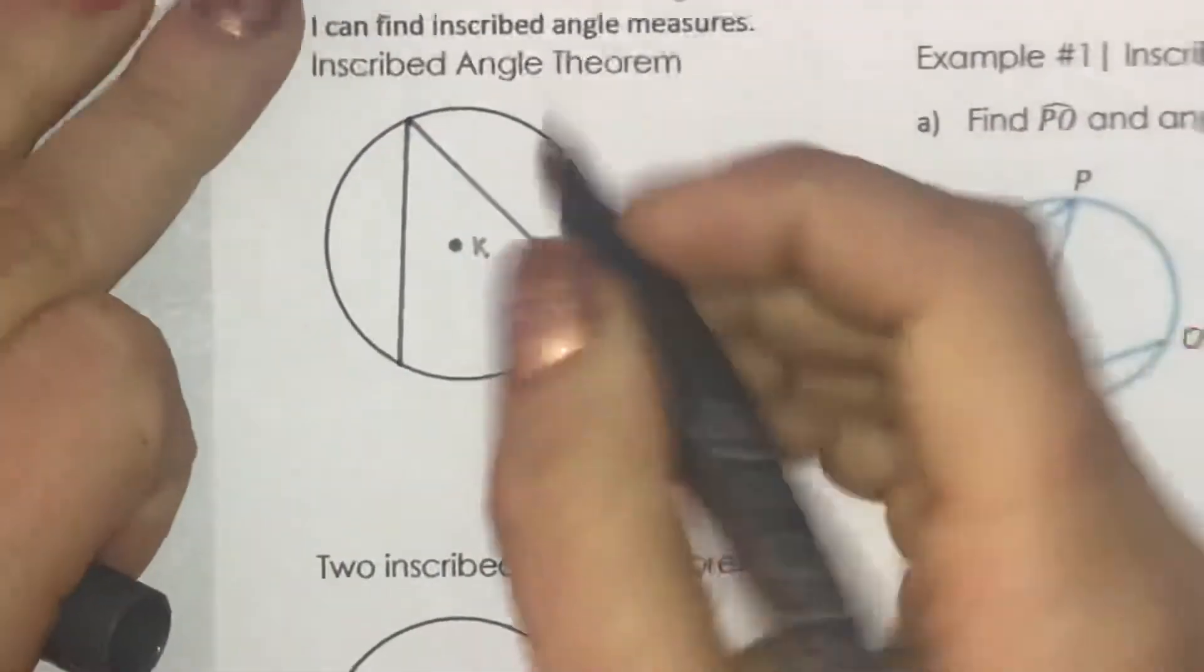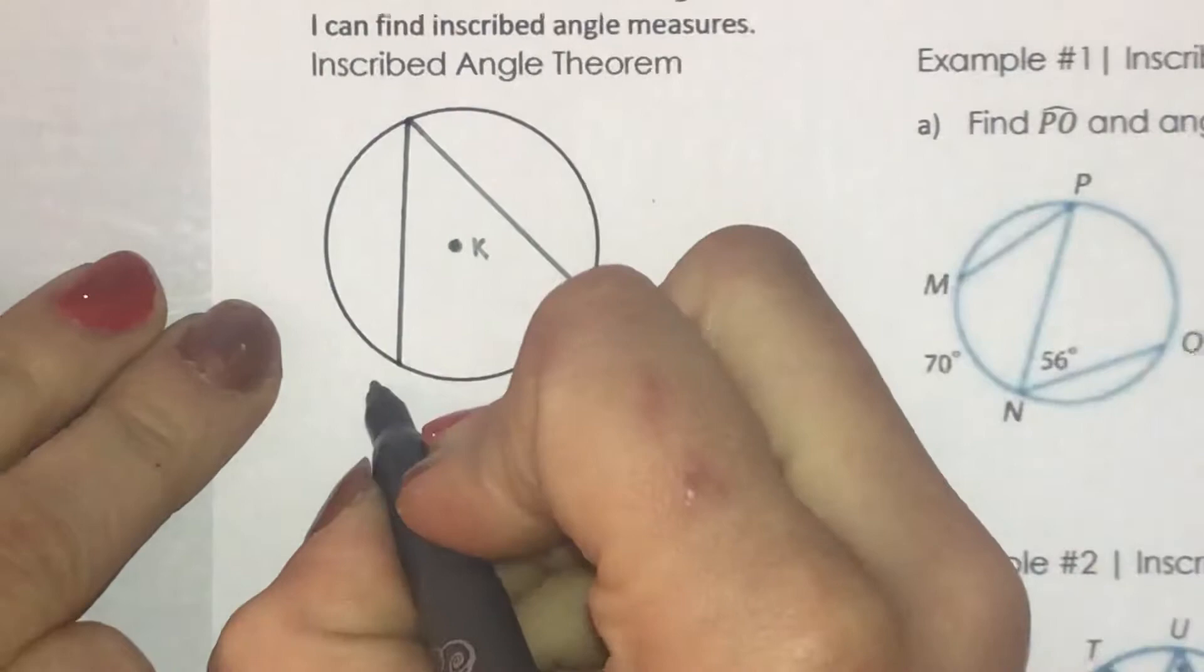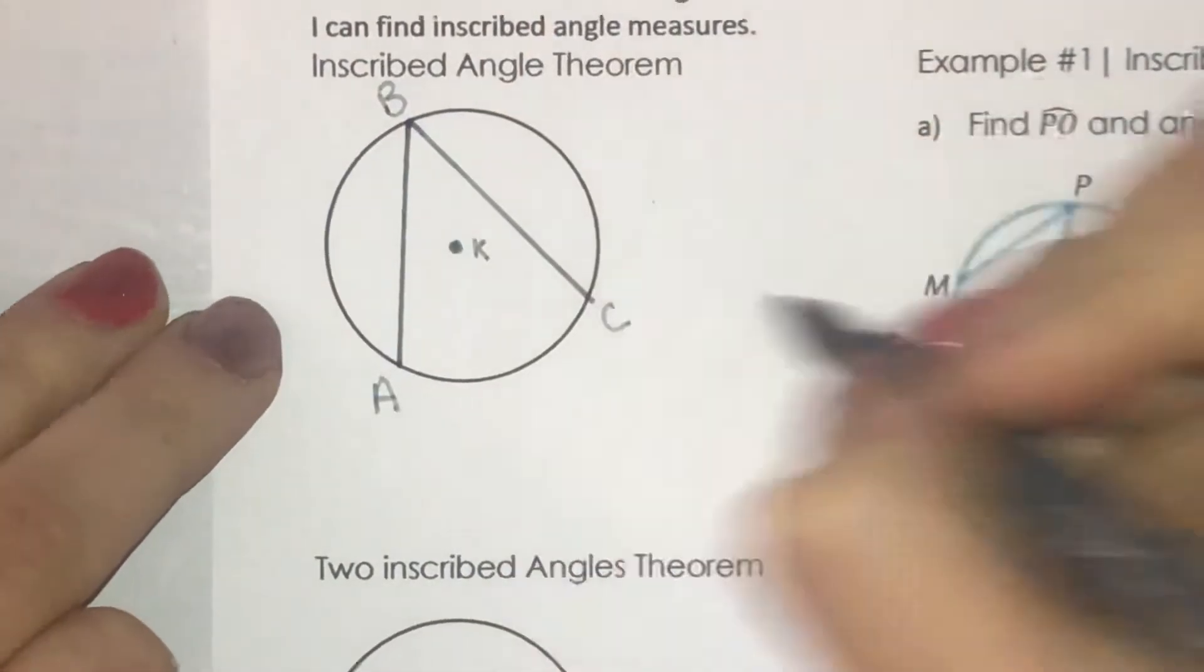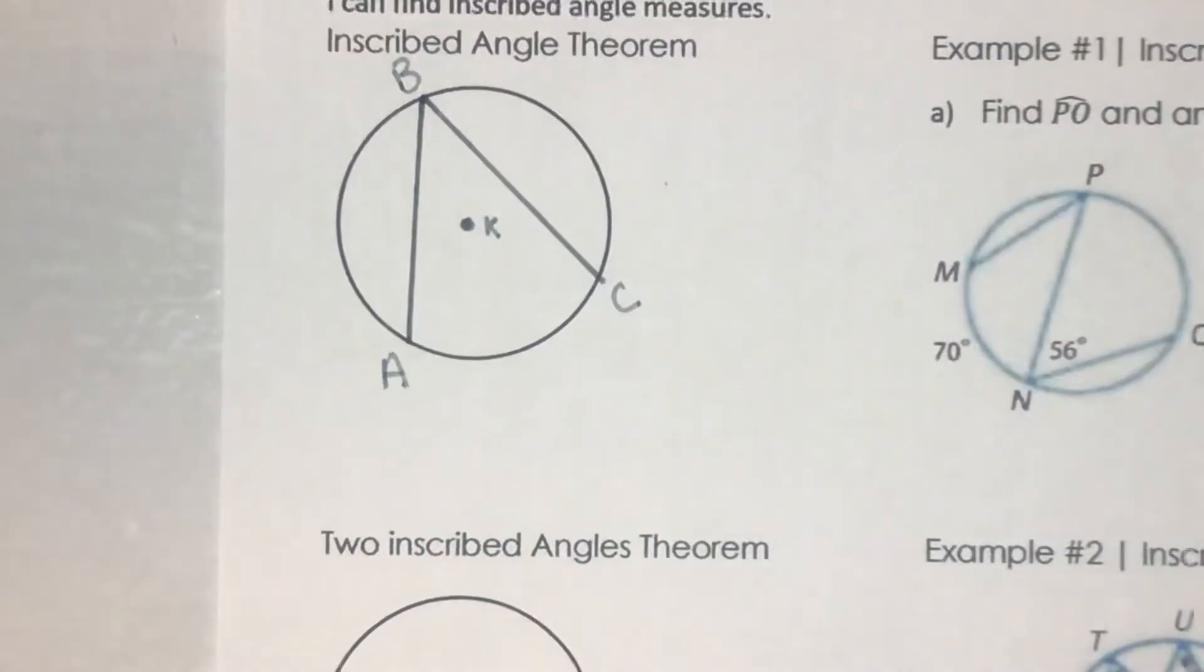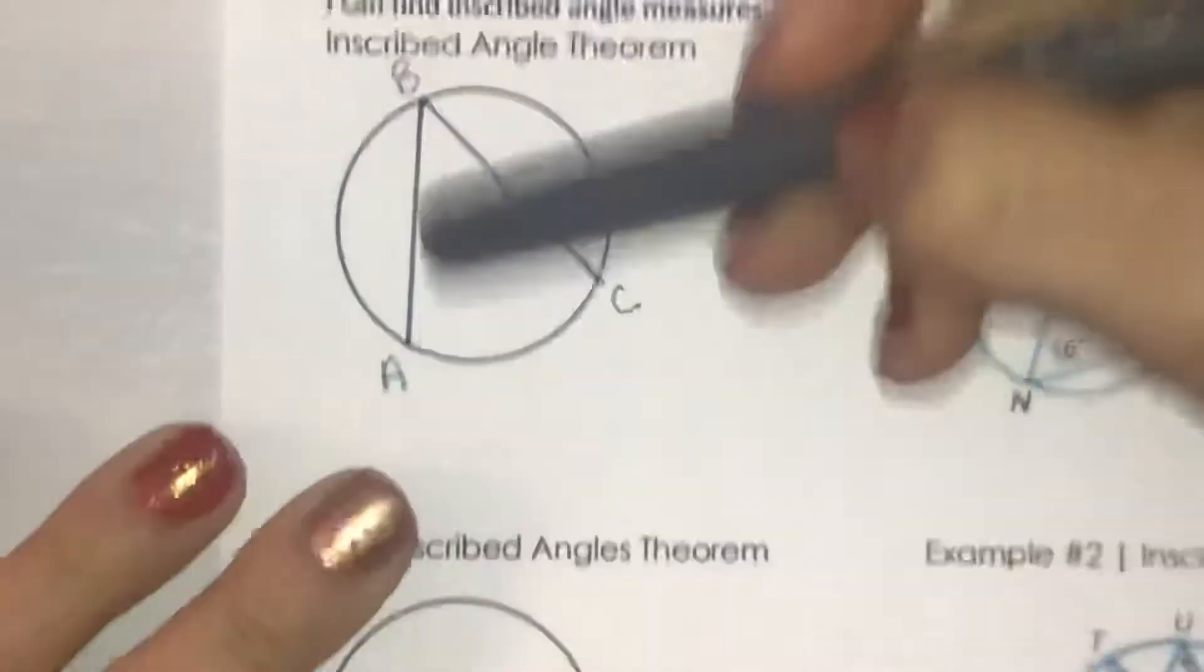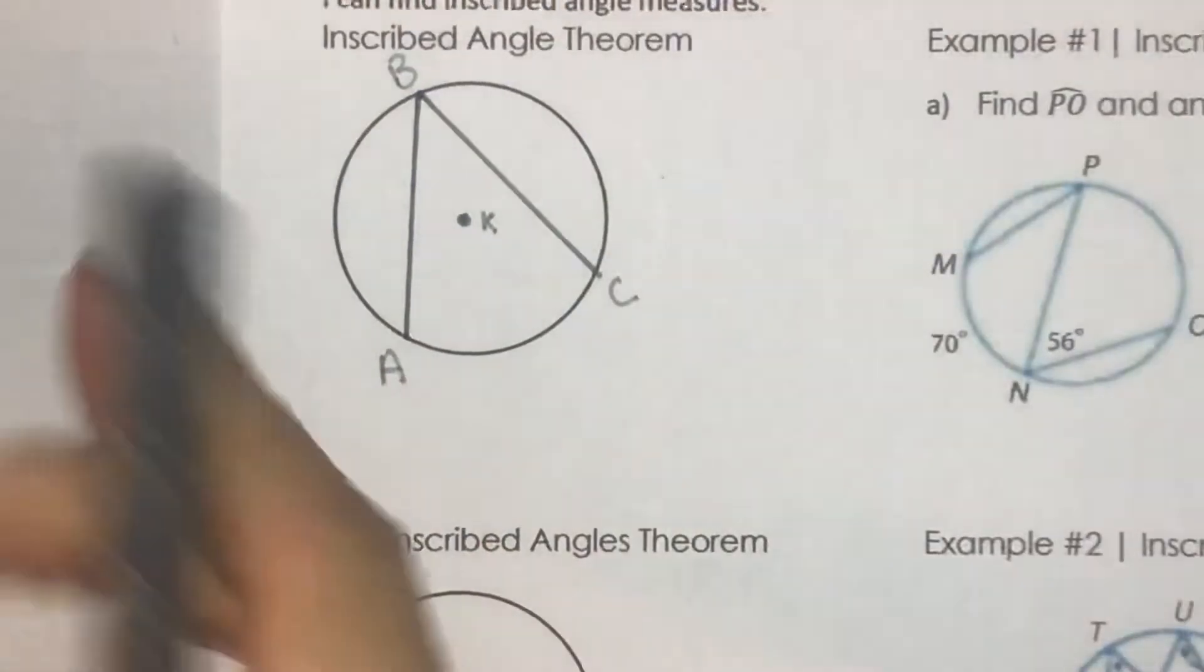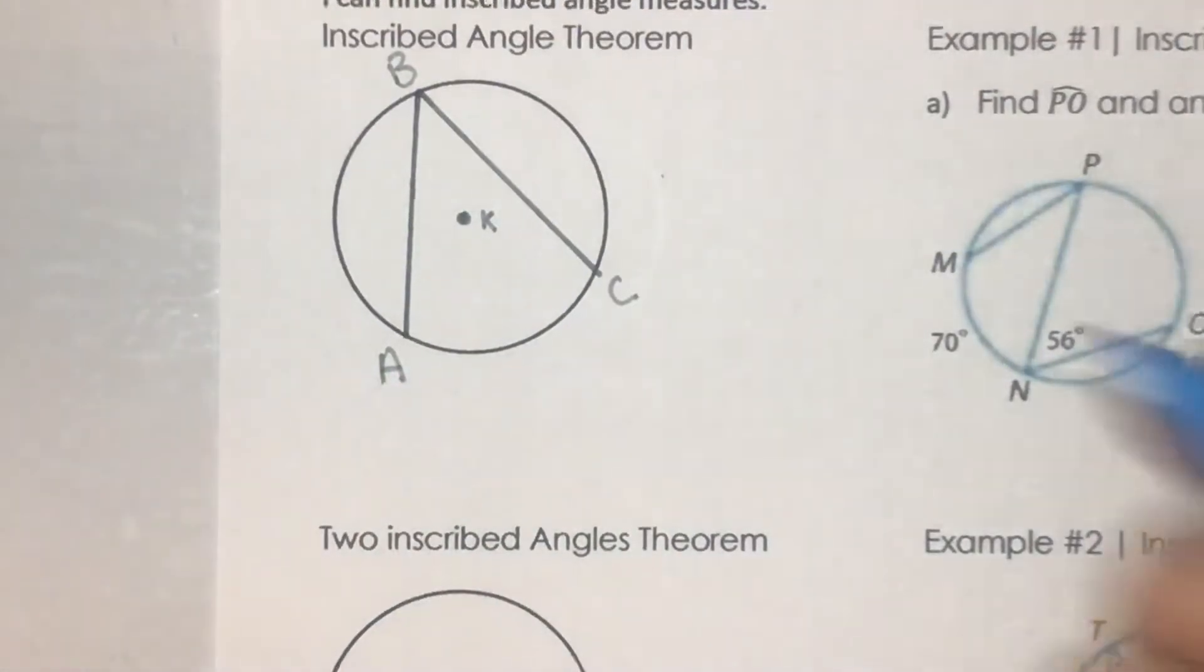Okay, so my inscribed angle here, I'm just going to label it ABC. And there's a special relationship when we have the vertex B on the outer layer of the circle. We have a formula because we have an angle here.